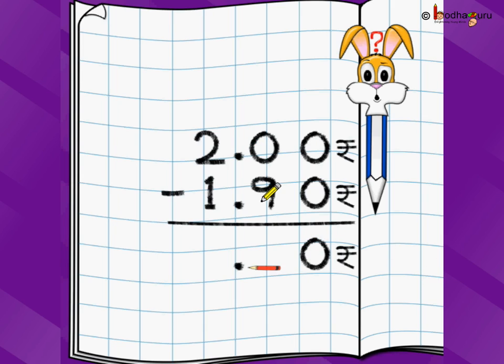We start doing subtraction 0 minus 0 is 0. Now, we have to do 0 minus 9. Can we do that? No, right? Because 0 is lesser than 9. So, how do we do it in typically 2 or 3 digit subtraction?